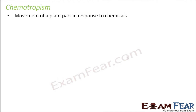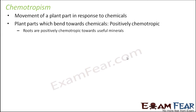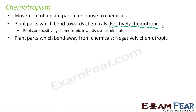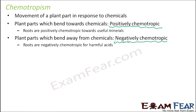The last type is chemotropism — movement of a plant in response to chemicals, specifically the nutrients present in the soil. Roots are positively chemotropic because they tend to grow towards useful chemicals in the soil. Shoots are negatively chemotropic because chemicals are transported to them through the vascular bundles inside the plant. When talking about chemotropism, roots are positively chemotropic for useful minerals but negatively chemotropic for harmful acids, as they do not want to absorb them.